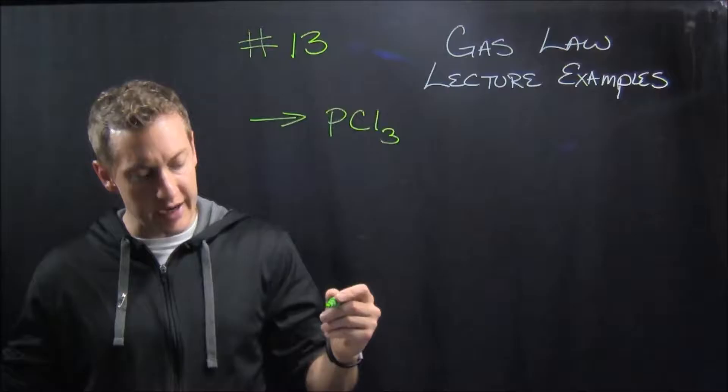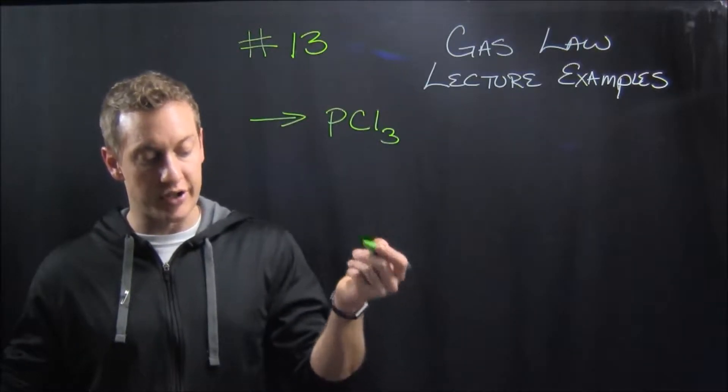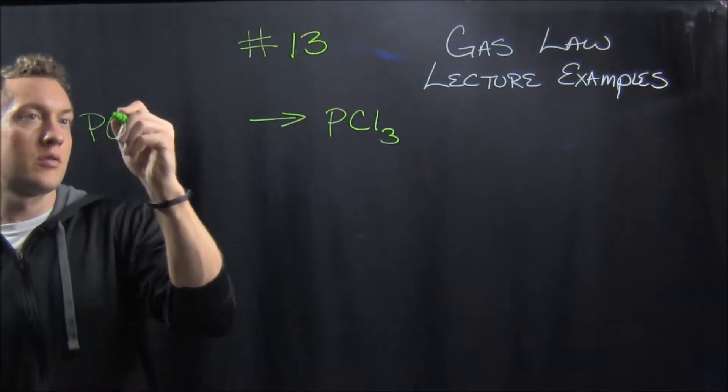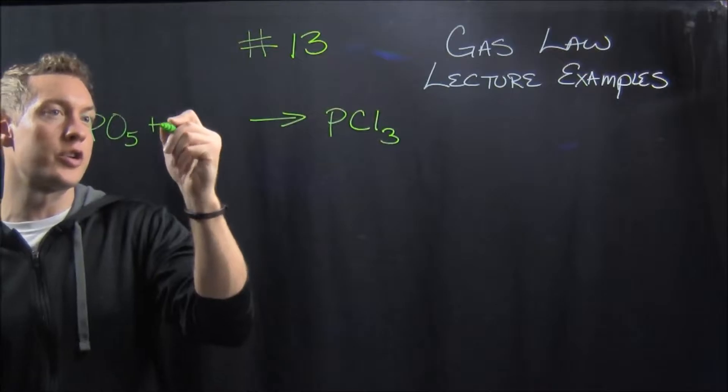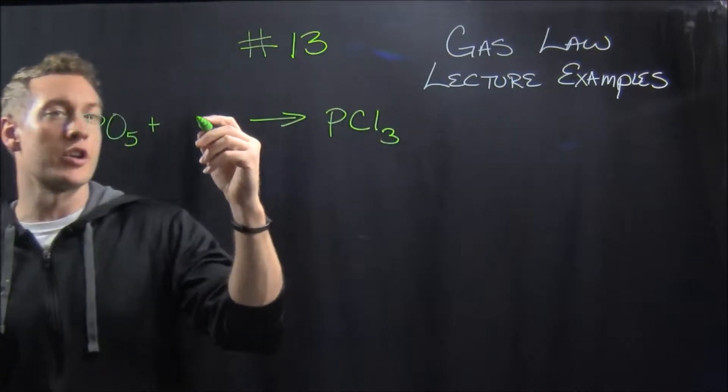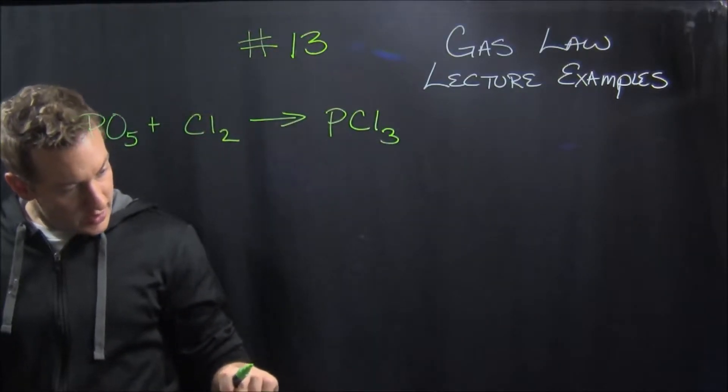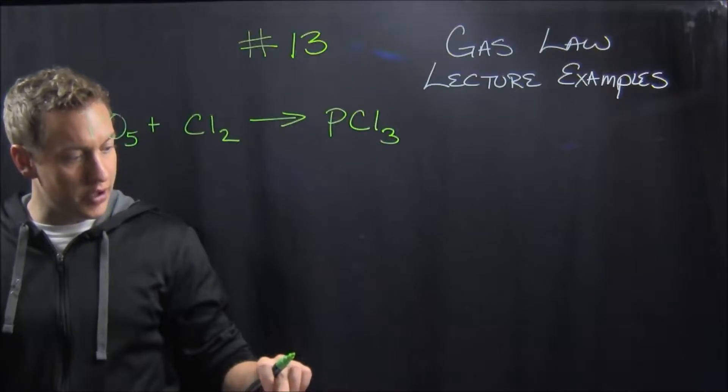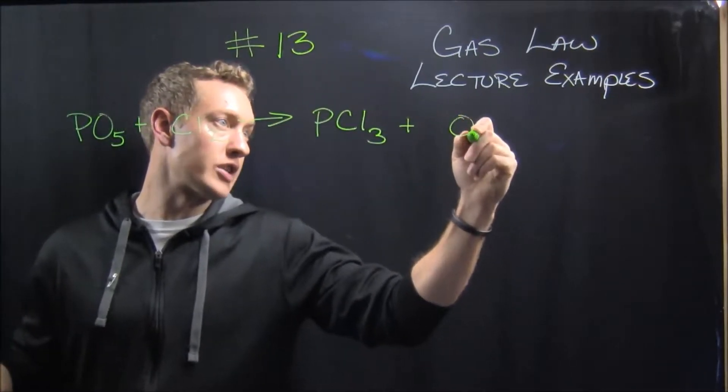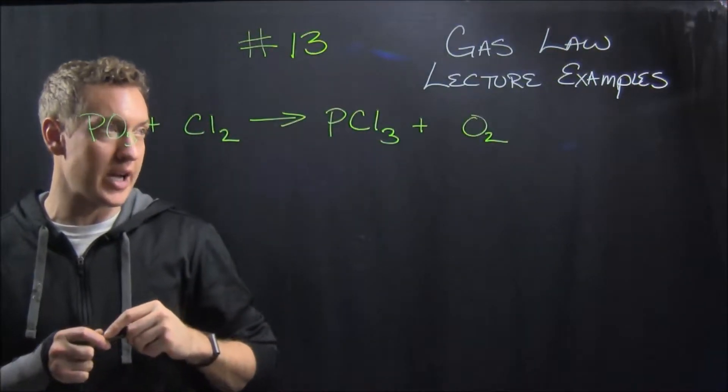It is produced by reacting PO5 with chlorine gas. So it's telling us our reactants are PO5 and chlorine gas. And if you remember, chlorine is a diatomic gas, so it's going to be PO5 plus Cl2. And then it says that elemental oxygen is a byproduct, so that means it's going to be, those oxygens end up there as O2, also a diatomic gas.